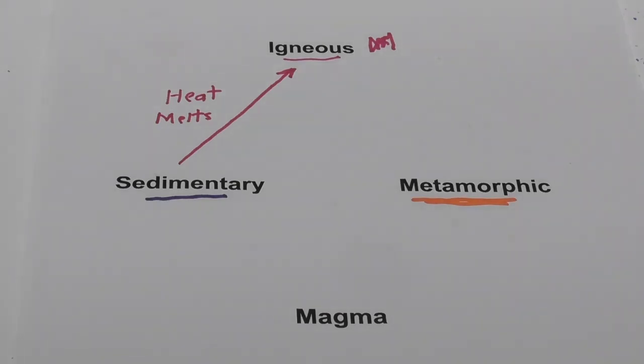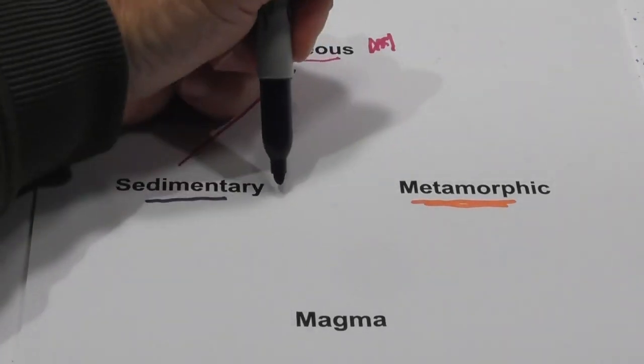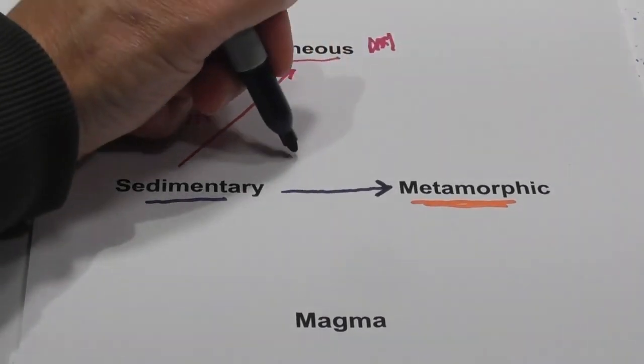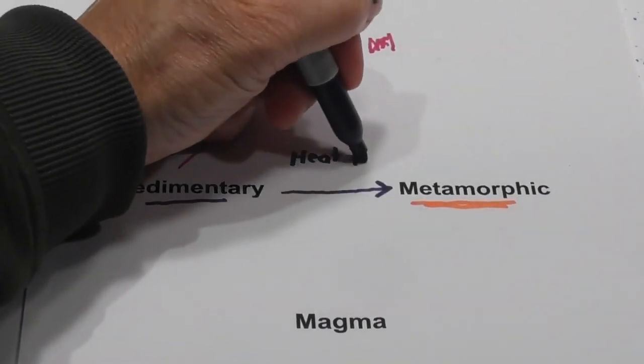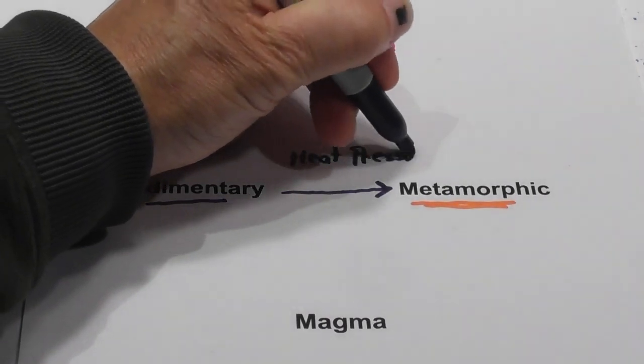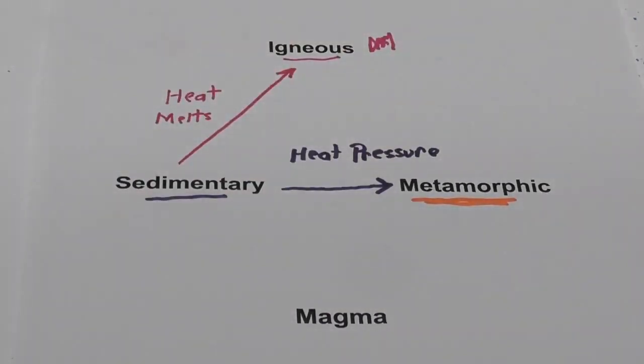How about a sedimentary rock becoming a metamorphic rock? Well, I'm going to use a different color there, and it's going to require heat and pressure. But the heat is different than an igneous rock because it does not melt it completely.